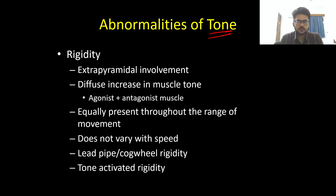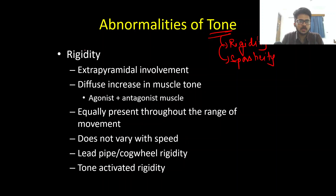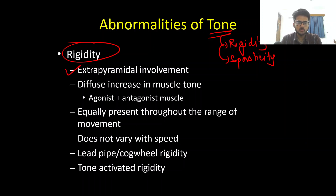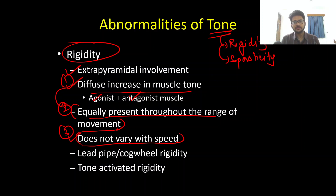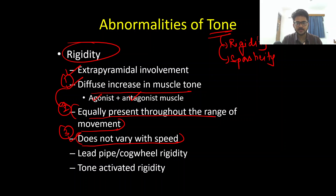Rigidity is because of extrapyramidal involvement — that is, involvement of the basal ganglia and its connections. Three important points about rigidity: number one, it involves all muscle groups equally — there is a diffuse increase in tone in both agonist and antagonist muscles. Number two, rigidity is equally appreciated throughout the range of movement. Number three, it does not vary with speed — it is velocity independent. These points help differentiate rigidity from spasticity.